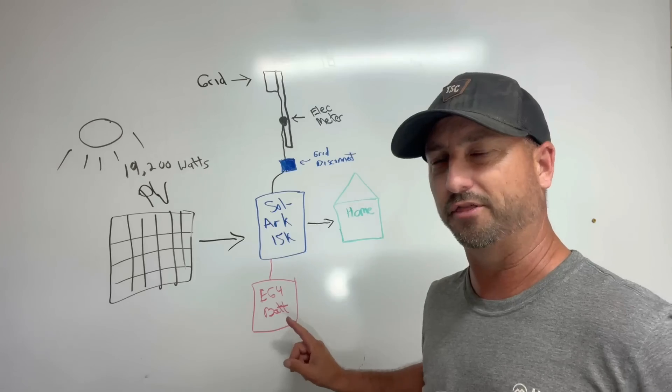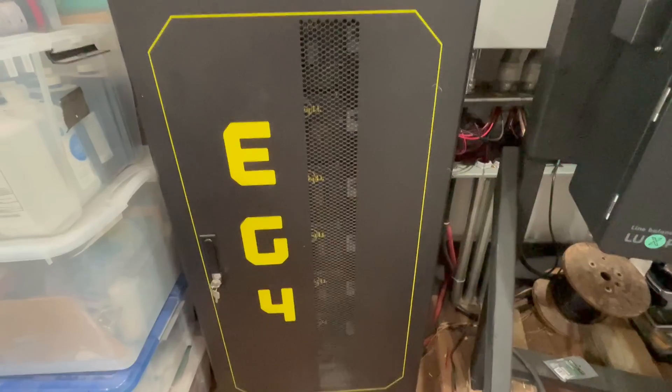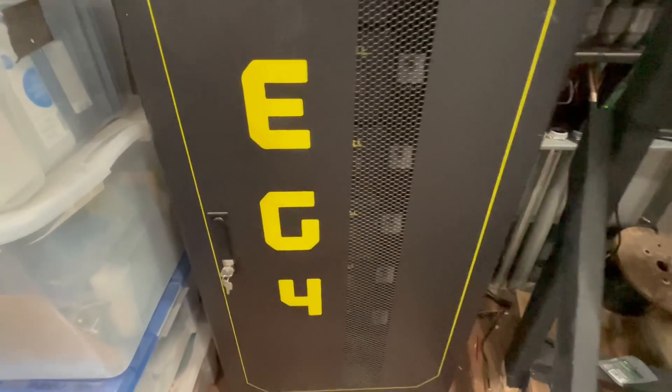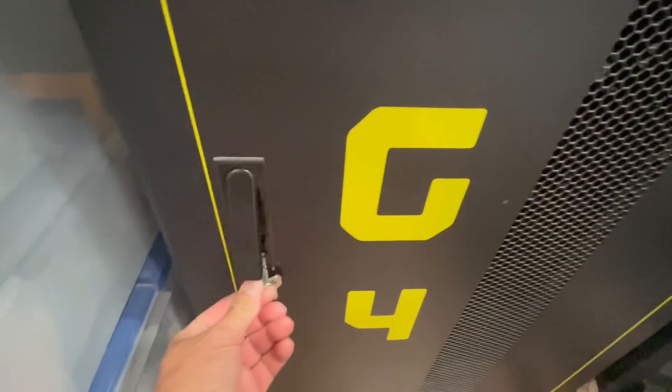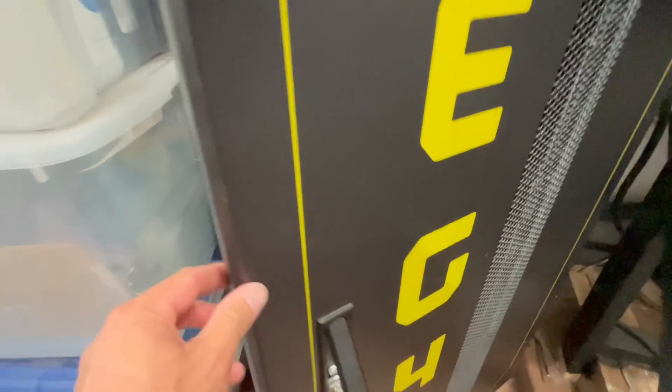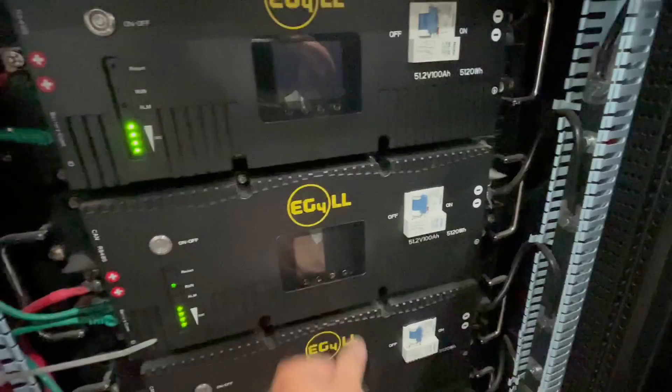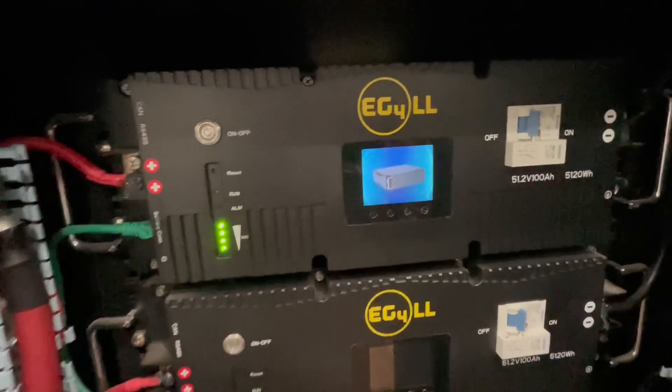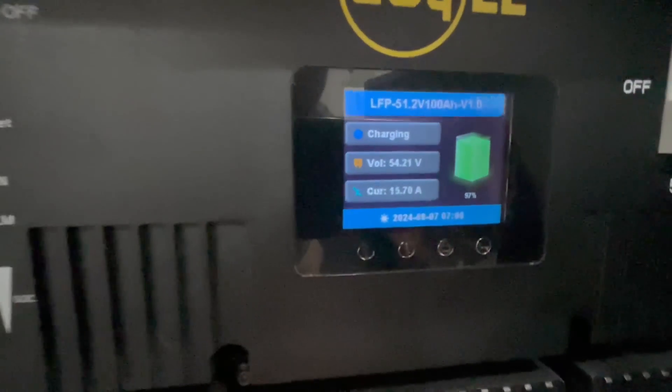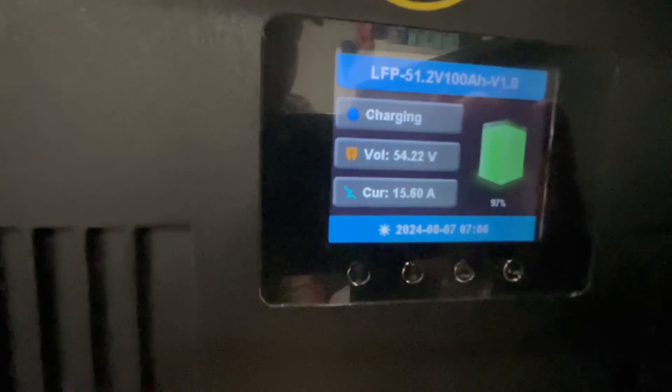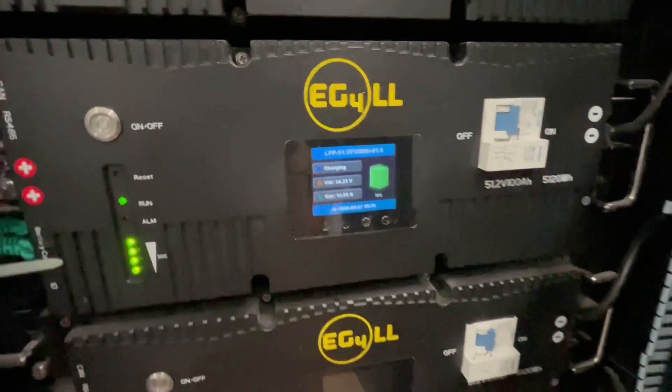Now my batteries that I use here are 30 kilowatt hours of the EG4 LL server rack batteries. They're 48 volts and they've been a rock star for me. I've had no issues. They power my whole house, air conditioning, literally everything. When the sun is out my Solark 15k converts that solar energy, sends it right to my house to power my entire house. When the sun goes down it goes to batteries and uses that instead to power my house.